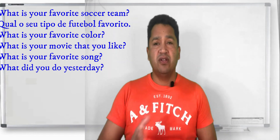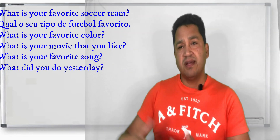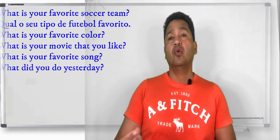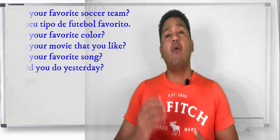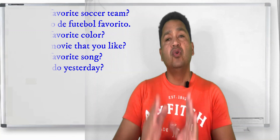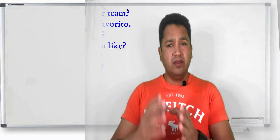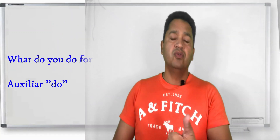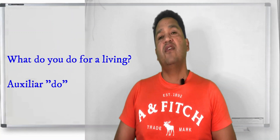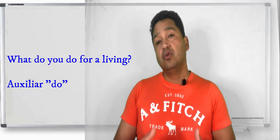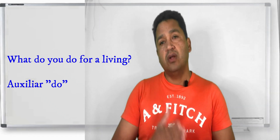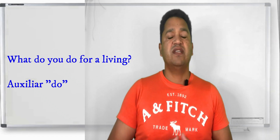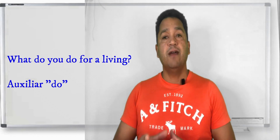Generally, we also use 'what' with the auxiliary verb 'do.' So, what do you do? When we say 'what do you do for a living?' I used the auxiliary verb 'do.' So, 'what do you do for a living?' — O que você faz para viver?